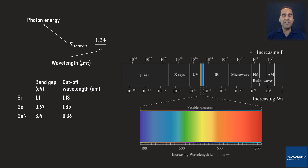Since 1.13 micrometer is larger than 0.7 micrometer — the red light boundary — a silicon-based photodetector is sensitive to infrared light. For germanium, the band gap is around 0.67 electron volts, and therefore the cutoff wavelength is 1.85 micrometer, so a germanium-based conductive photodetector is also sensitive to infrared light. Gallium nitride has a band gap of around 3.4 electron volts at room temperature, giving a cutoff wavelength of 0.36 micrometer — the wavelength of violet light, slightly into the ultraviolet — so this photodetector is sensitive to ultraviolet light but not to any light with a wavelength greater than 0.36 micrometer.